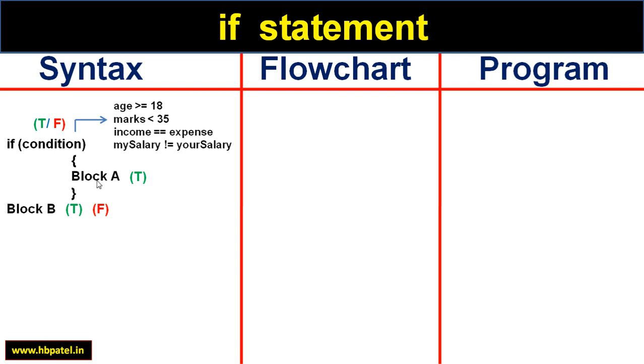But if the condition is false or no, then in that case block A is skipped and only block B is executed. If I summarize again, if the condition is true then block A then block B, but if the condition is false then only block B. Simple.